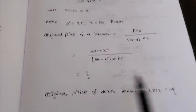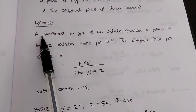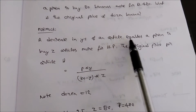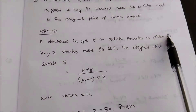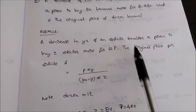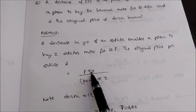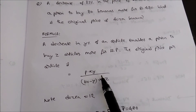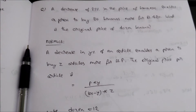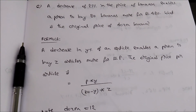So the original price of a dozen bananas is 24 rupees. Please remember the formula: a decrease of y percent in an article enables a person to buy z articles more for rupees p. The original price per article is p into y divided by (100 minus y) into z. Thank you for watching this video, please subscribe to my channel. My app is Quiz.